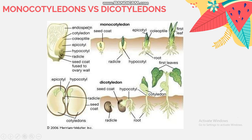Monocotyledons have fibrous roots and also parallel leaves. And what about the dicotyledons? Dicotyledons means plants that produce seeds with two cotyledons — yang artinya tanaman yang menghasilkan biji berkeping dua.